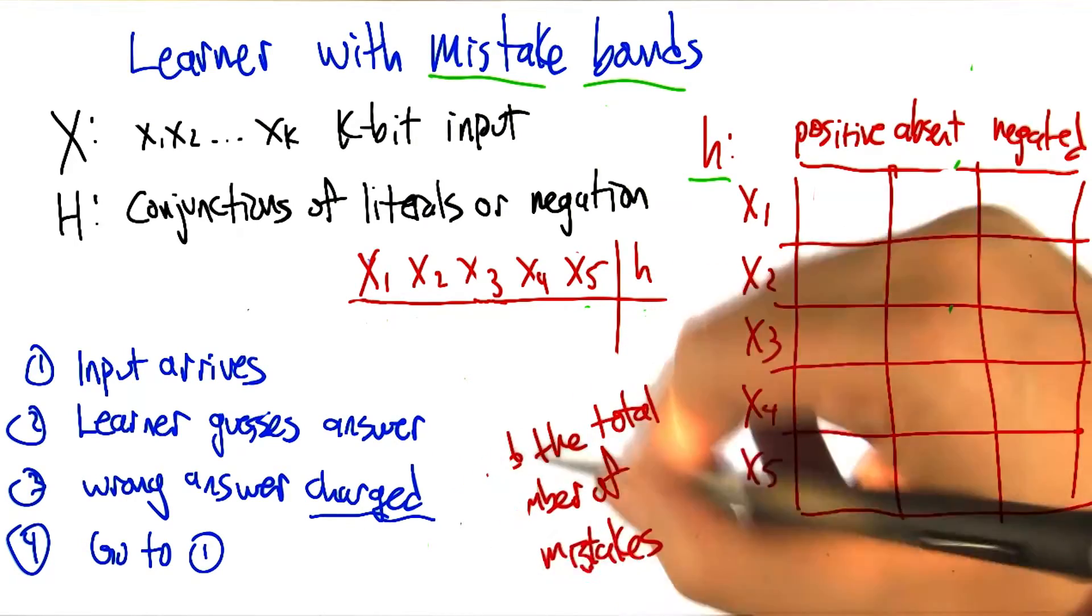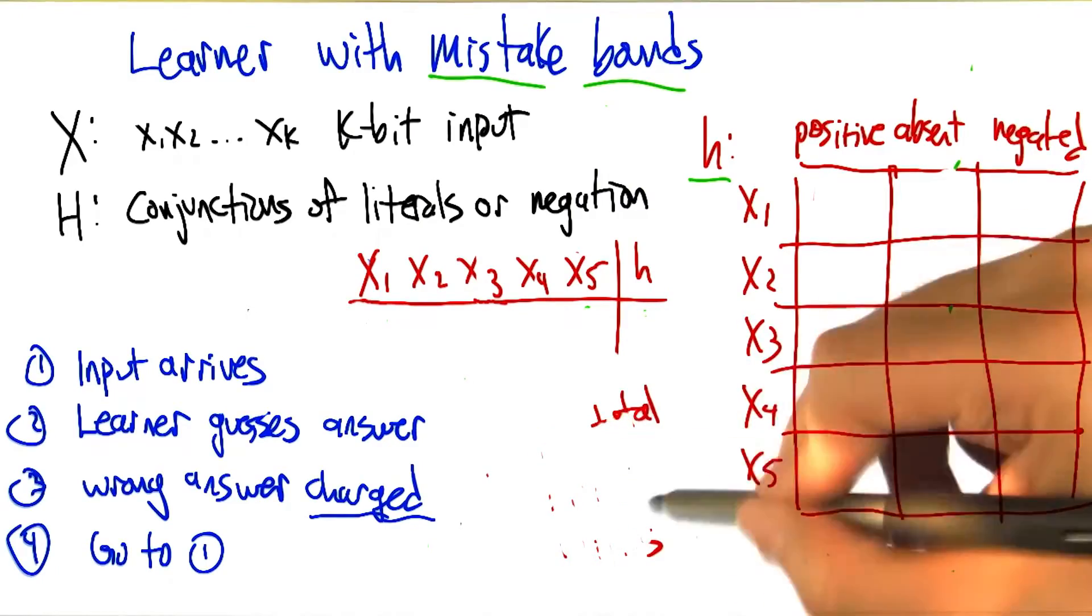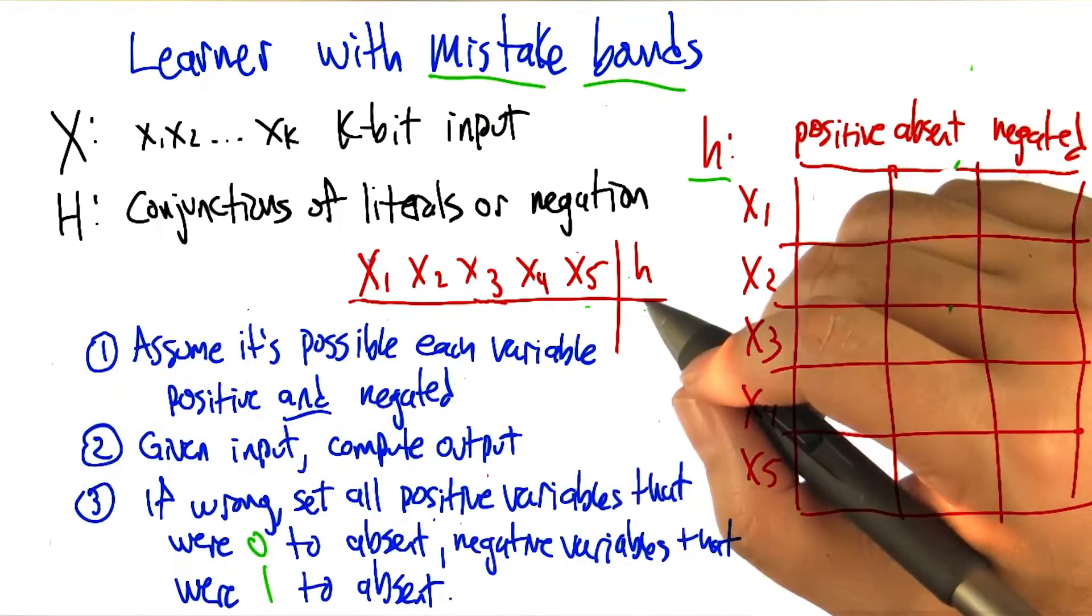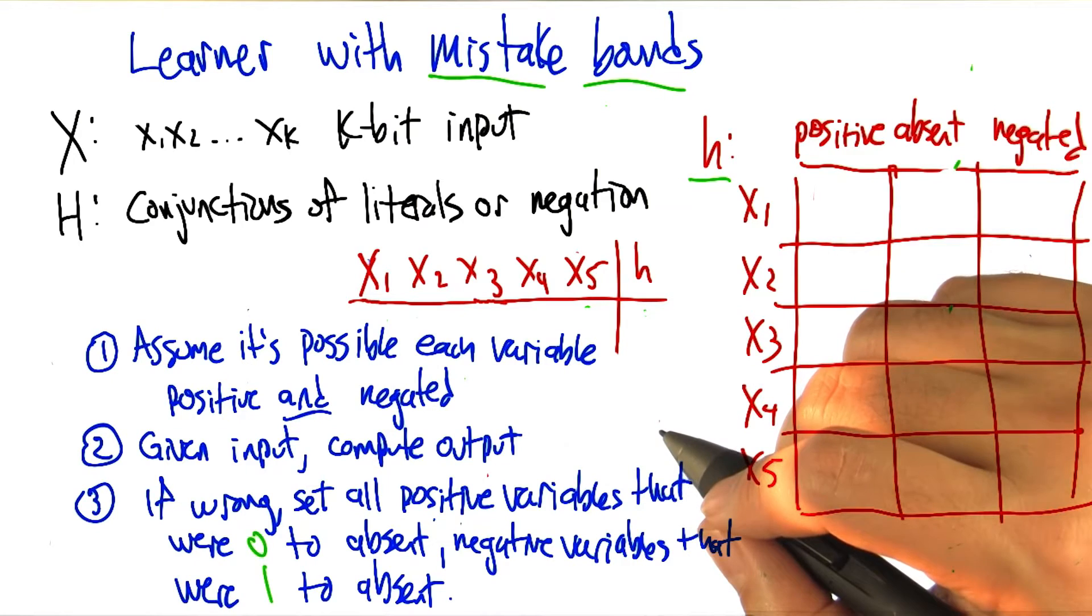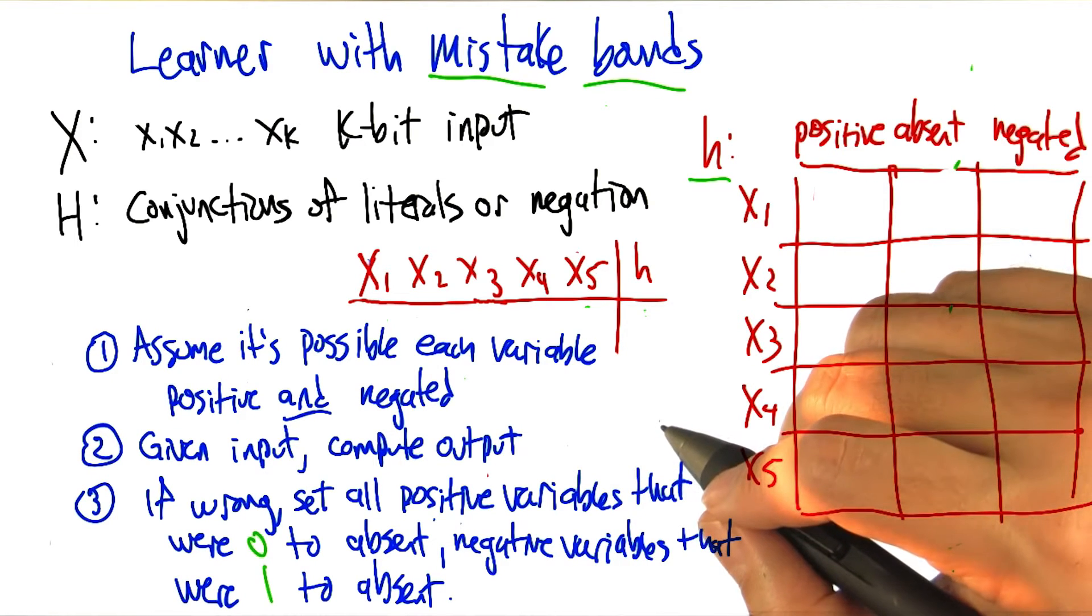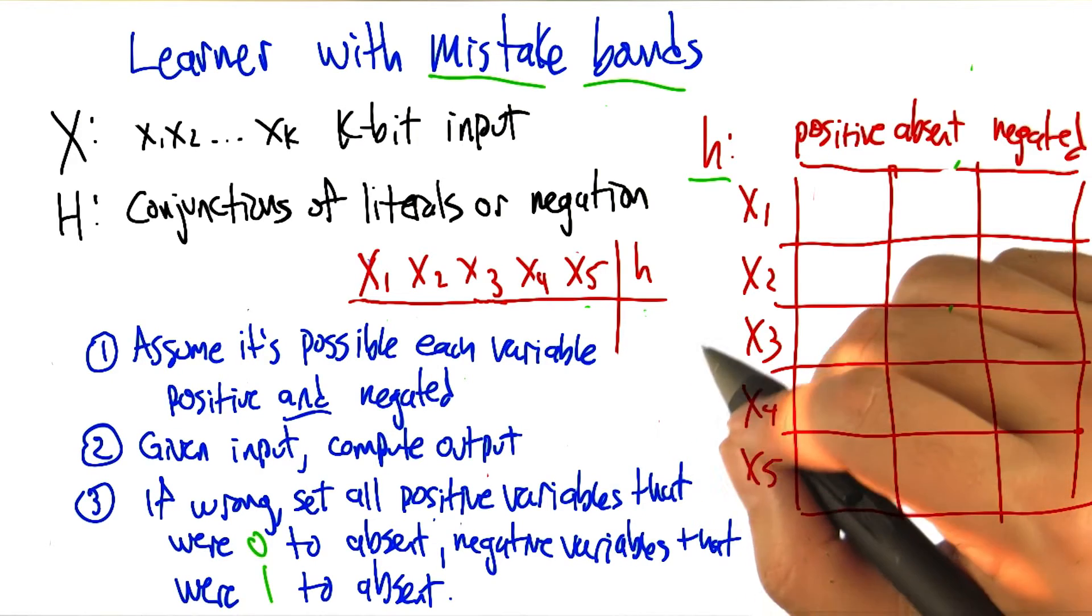Outstanding. Yes, exactly so. So let's turn that into an algorithm. So here's an algorithm that's really simple and actually can learn very effectively for these kinds of mistake bound problems. It works like this.